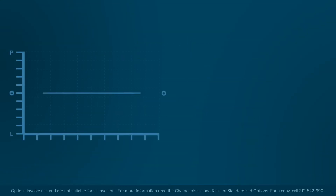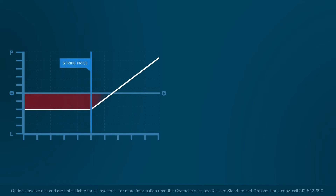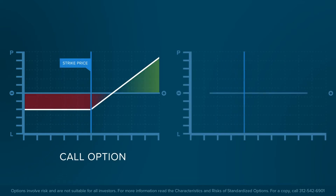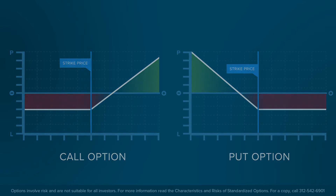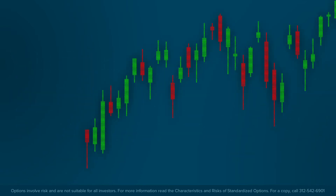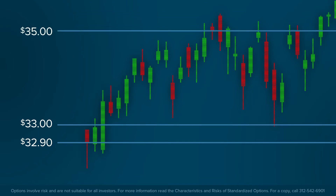The strike price represents the predetermined price at which an option contract may be exercised, where a call option buyer can buy the underlying asset from an option seller, or a put option buyer can sell the underlying asset to an option seller. Consider a company whose share price is $32.90. An investor who expects the share price to rise is considering buying a call option at strike prices of $33 or $35.